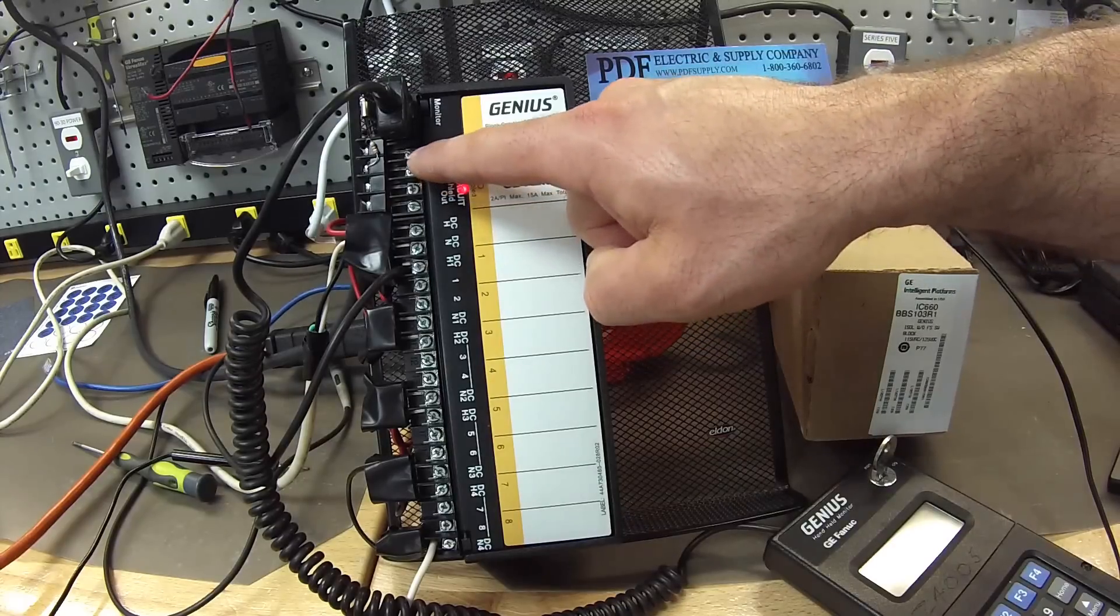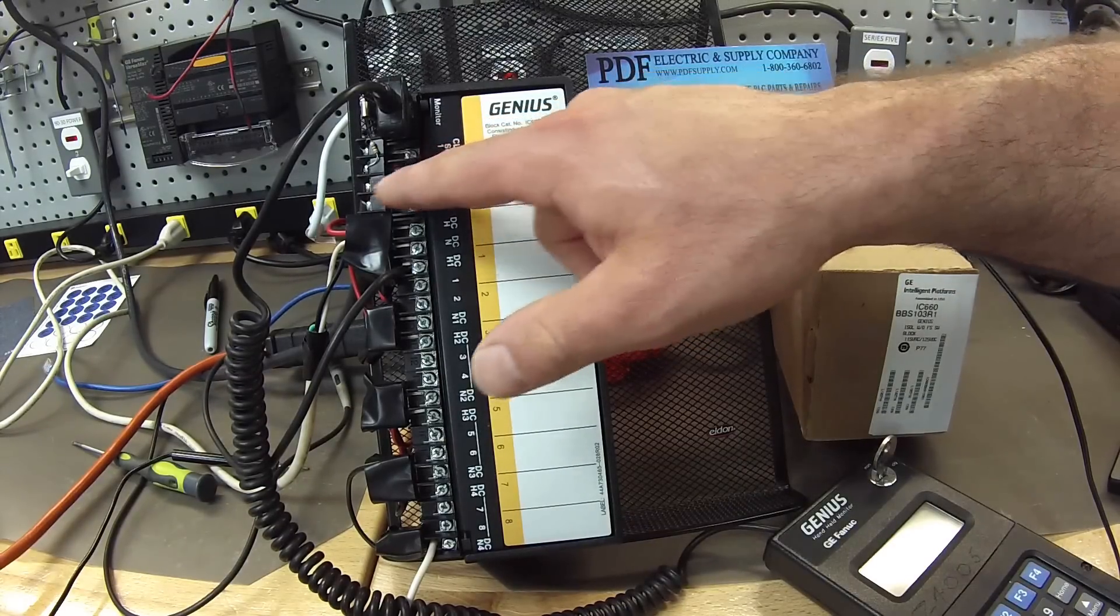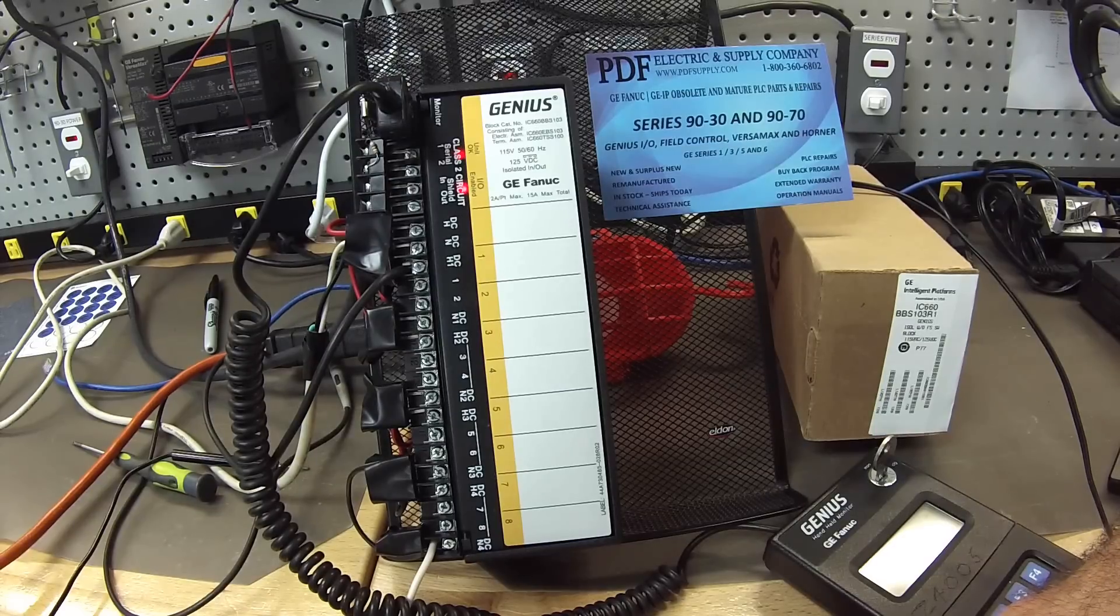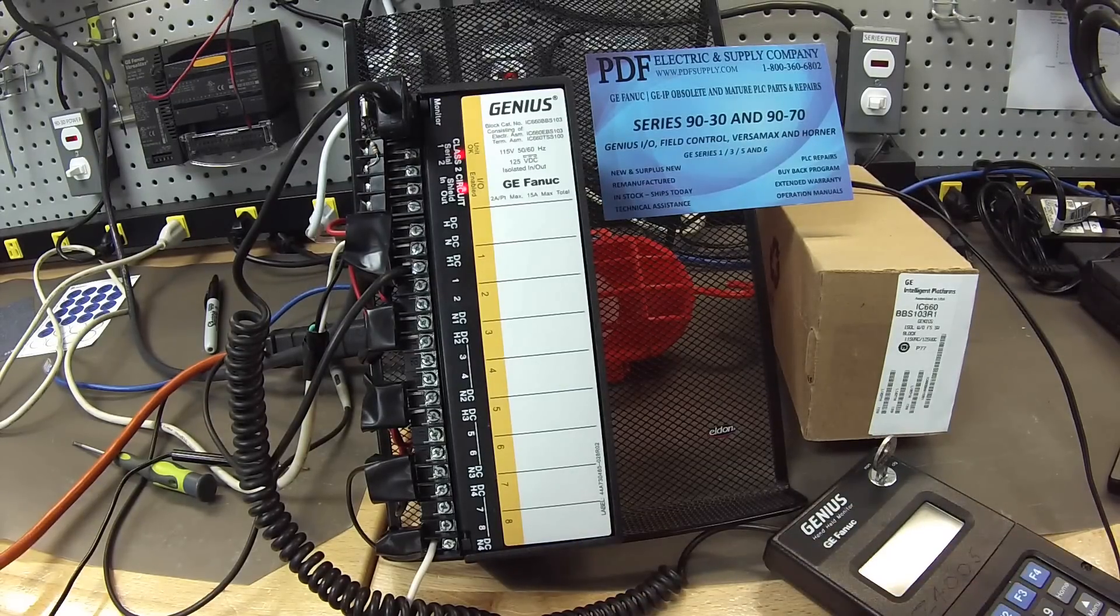There's also information that's going to be transferred from this Genius Block through the Proficy Machine Edition in my input and output tables. I might get into that just for a moment later.